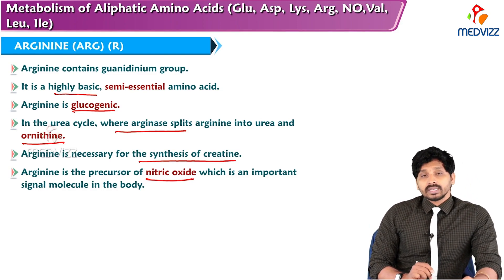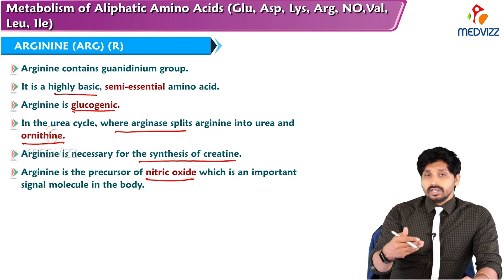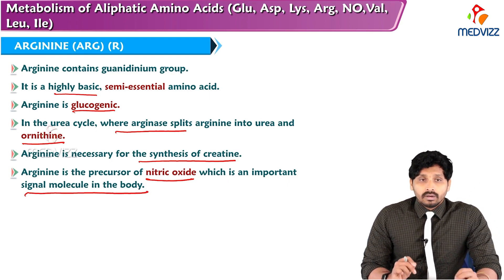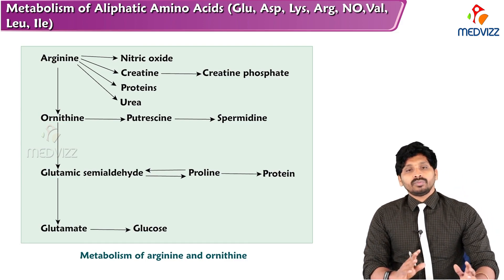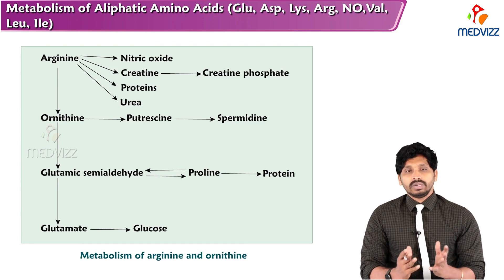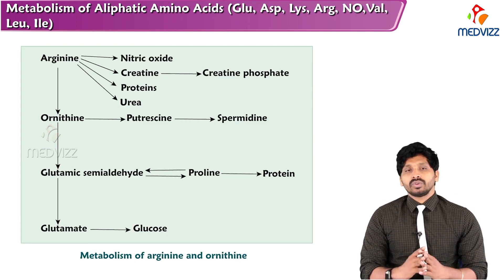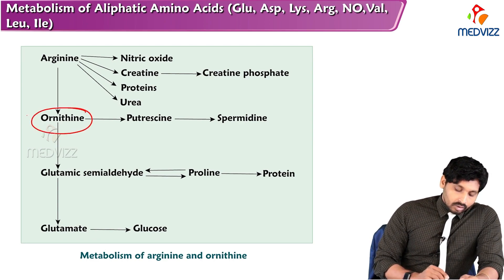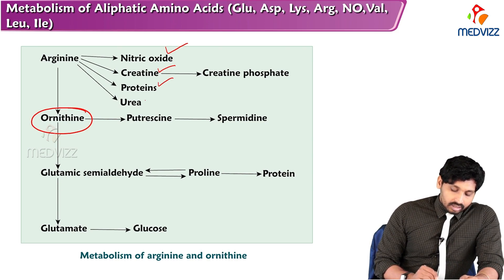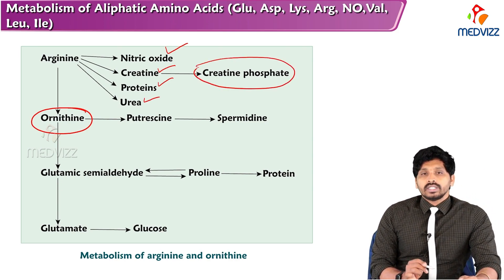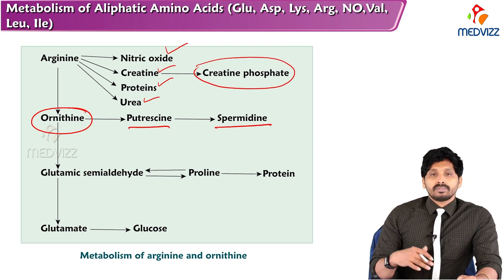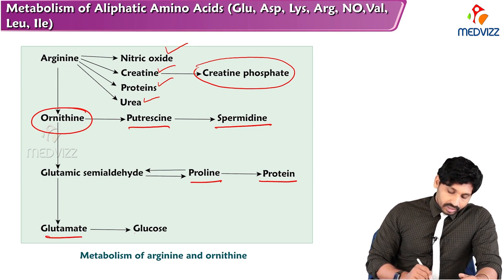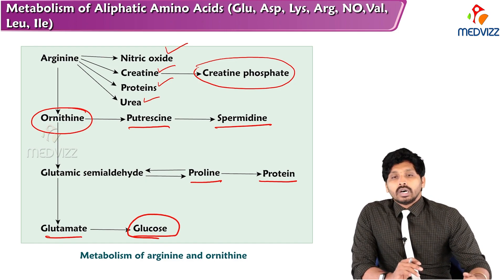Arginine is a precursor of nitric oxide, an important signal molecule in the body. In the overview of arginine and ornithine metabolism, since degrading arginine yields ornithine, arginase splits arginine into ornithine and urea. From arginine you get nitric oxide, creatine, proteins, urea, and creatine phosphate — the storage form of energy in muscles. Ornithine forms putrescine and spermidine, which are polyamines. Glutamic semialdehyde forms proline, incorporated into protein, and finally glutamate, which enters the gluconeogenic pathway to form glucose.